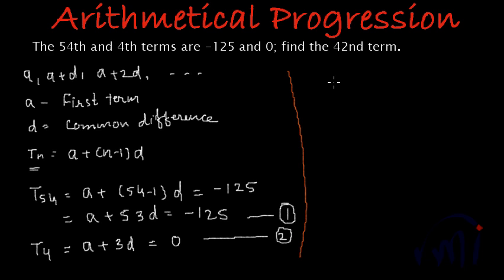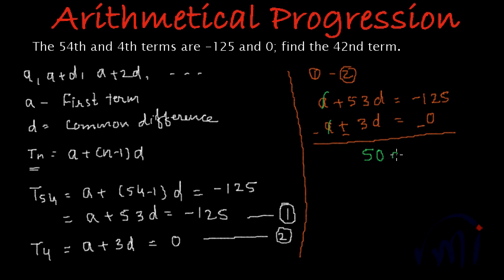And now if I subtract second equation from first equation, that is if I do 1 minus 2, our first equation is a plus 53d is equal to -125. And second equation is a plus 3d, this is equal to 0. And we have to subtract second equation, that means I have to change the sign of second equation. Then a minus a will give us 0 and 53d minus 3d will give us 50d is equal to -125 minus 0 will be -125.